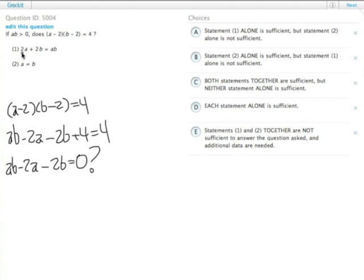Statement 1 tells us that 2a plus 2b equals ab. This looks a lot like what we got down here. Let's get ab over, ab is already on one side of the equation. If we subtract 2a from both sides and then subtract 2b from both sides, we get 0 equals ab minus 2a and minus 2b, which is exactly the equation that we had originally.